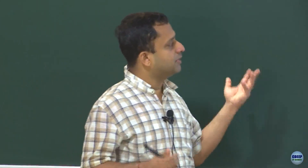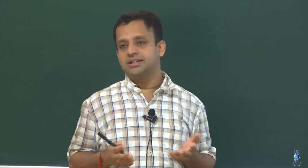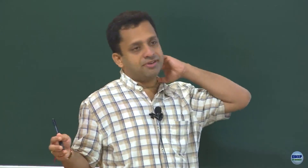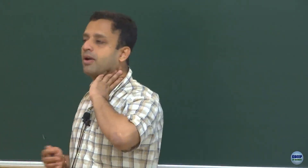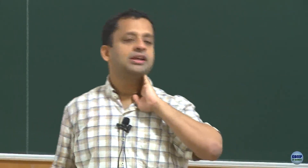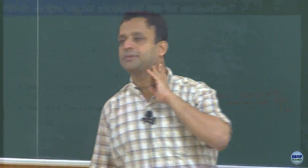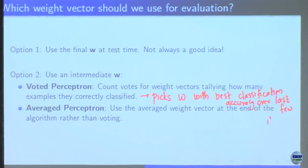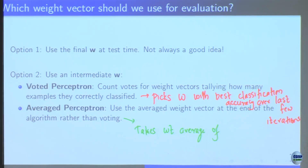Voted perceptron takes the w with the best classification accuracy among the last few iterations, whereas average perceptron takes a weighted average of all the last few w's, weighing them by how well that w contributes to the classification.